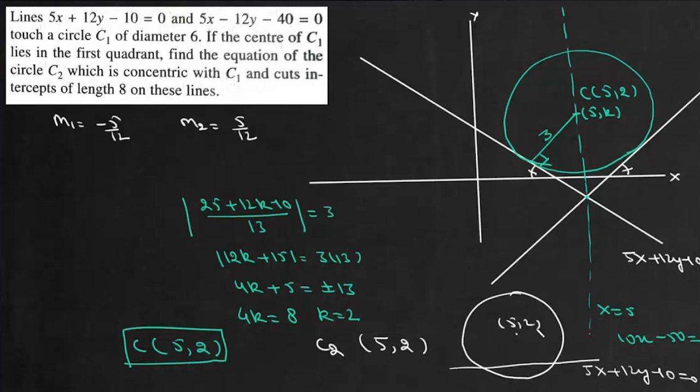This is 5 by 2. Perpendicular distance from the center is 3. So this distance will be 3. And this length is 8. So this length will be 4. That means radius of this circle will be 5.